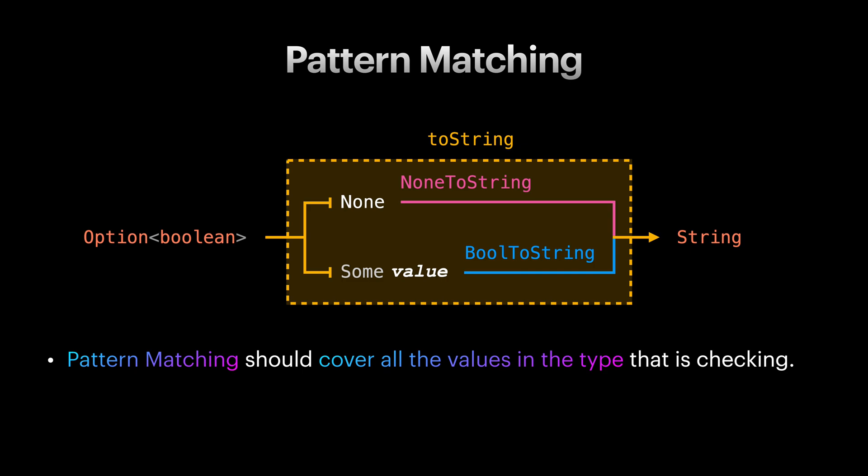When doing pattern matching, your cases should be exhaustive and cover all the values from its input type. In our example above, we are covering all the values in option of boolean in two cases of None and Some of boolean. And we didn't leave any values from option of boolean behind. Can you guess why we need to cover every value? The reason is if we model pattern matching as a function, that function should be total and cannot be partial because we don't have partial functions in functional programming.